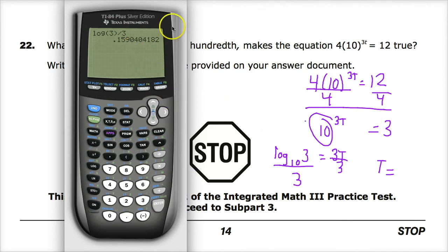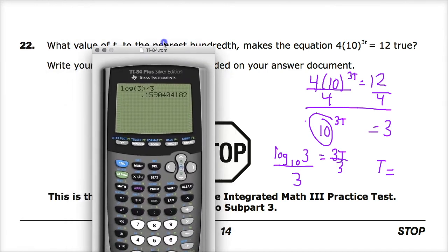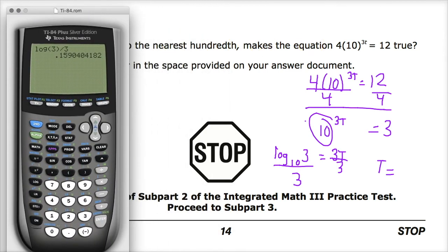And they want me to round to the nearest hundredth. So here's the hundredth. So I look at the one after it, five or more raise the score. So I am going to raise it. So it's 0.16. That is my answer to this question.